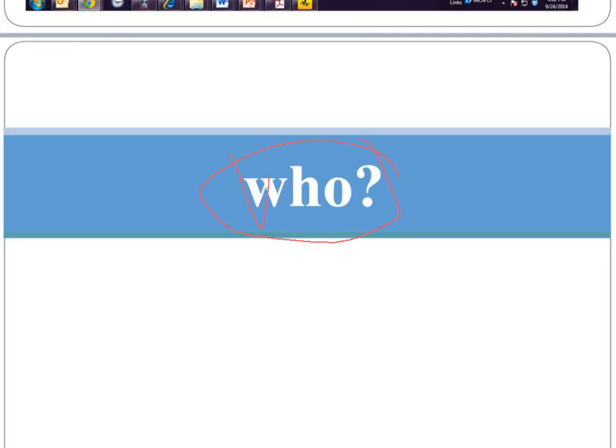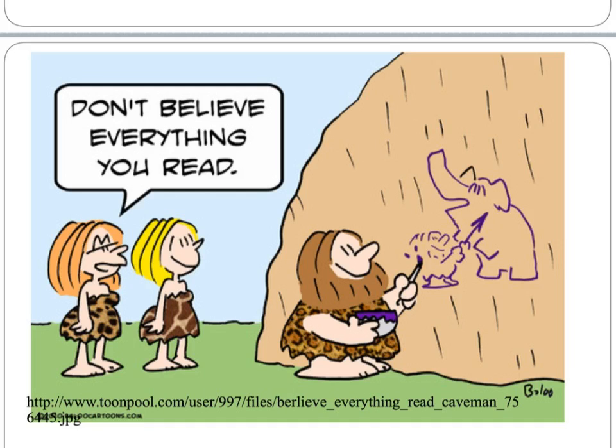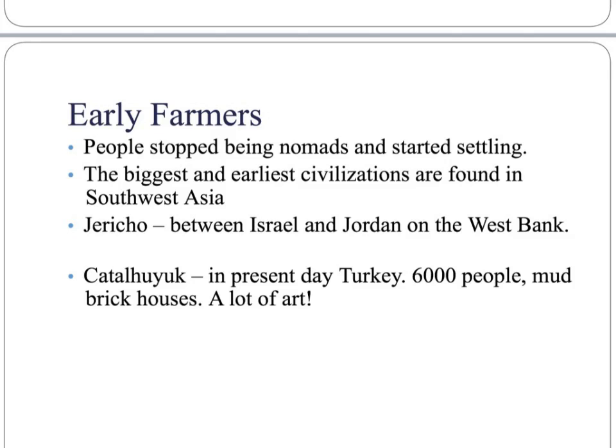Who? I have another comic — don't believe everything you read. Early farmers: people stopped being nomads and started settling. The biggest civilization was found in Southwest Asia, and that would be Jericho — well, between Jericho and Çatalhöyük. Jericho was found between Israel and Jordan on the West Bank in modern day. Çatalhöyük — I'm probably not pronouncing that right — is found in present-day Turkey. 6,000 people lived there, with mud brick houses and a lot of art.